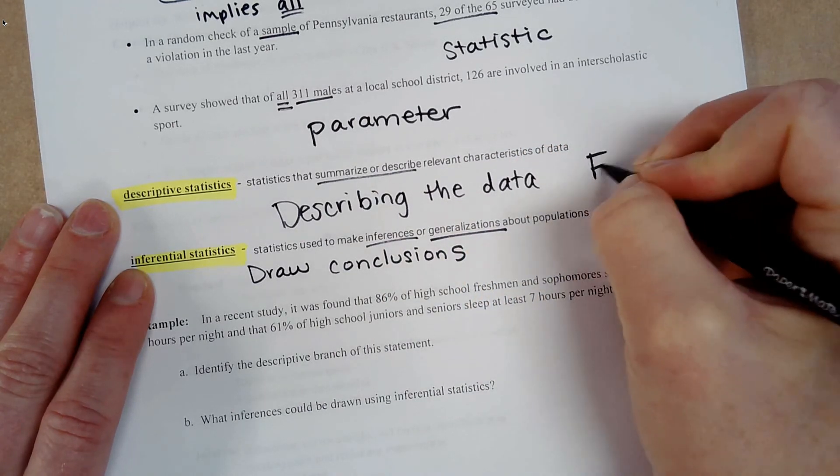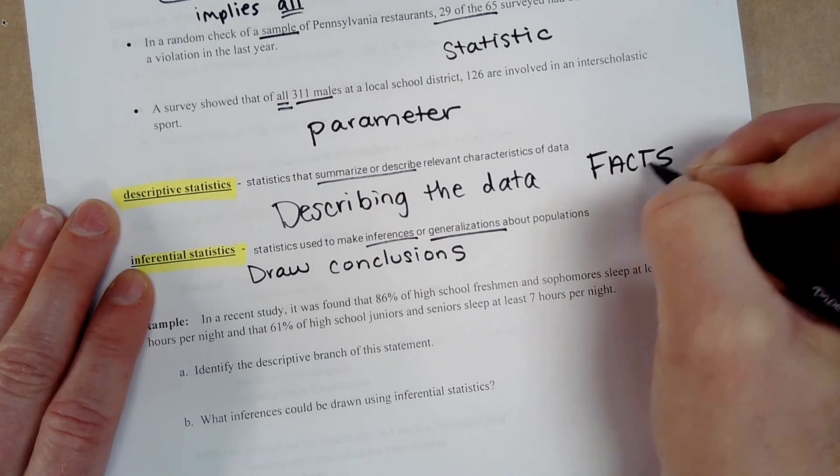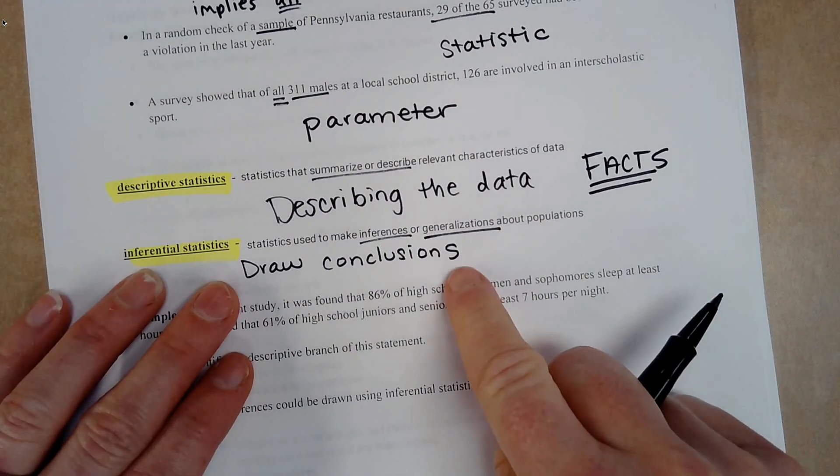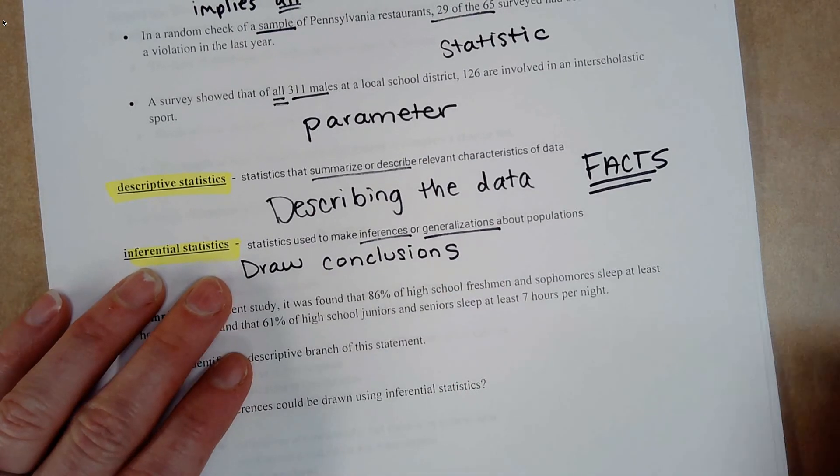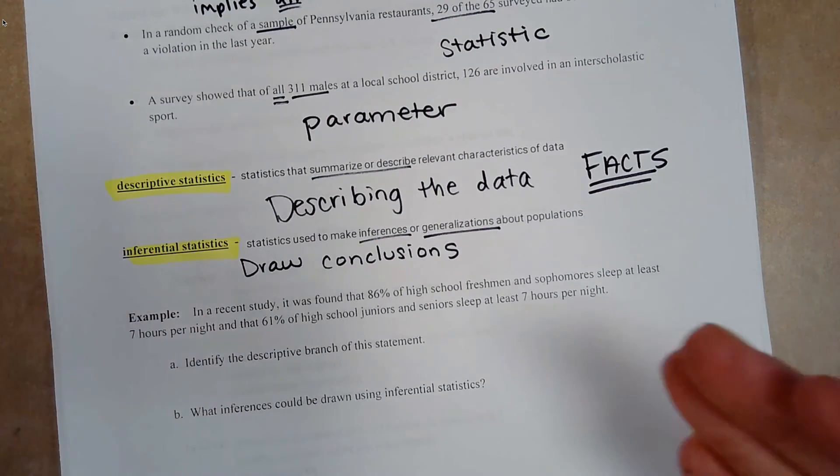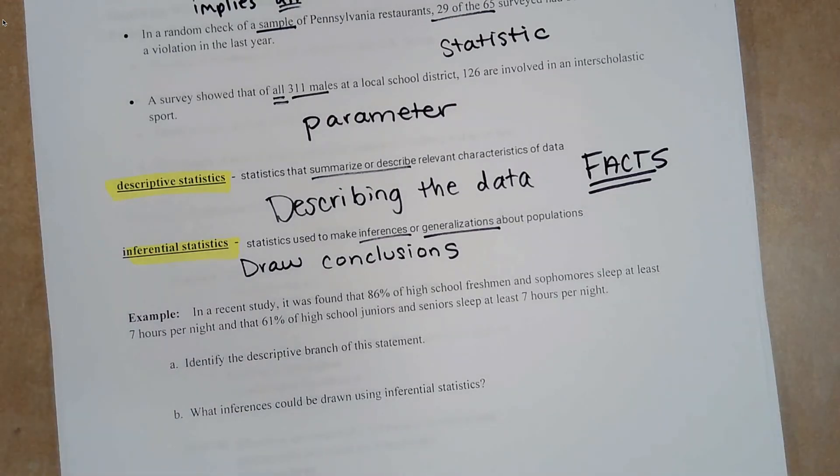Descriptive is just describing. This is purely facts. Drawing conclusion is using the facts to say, make some kind of statement about those facts.